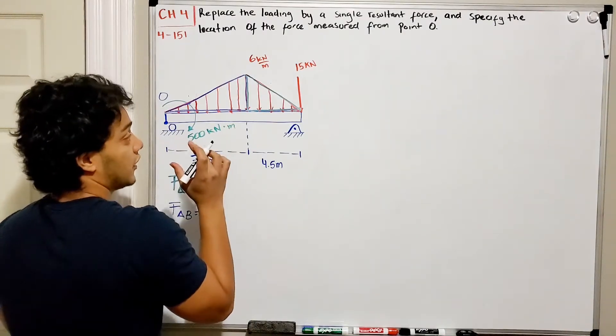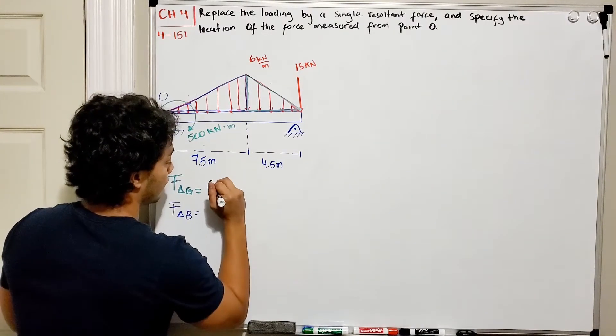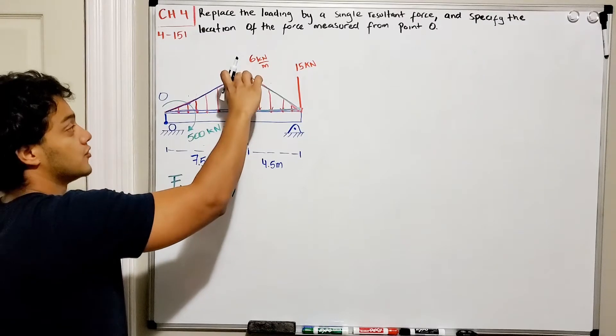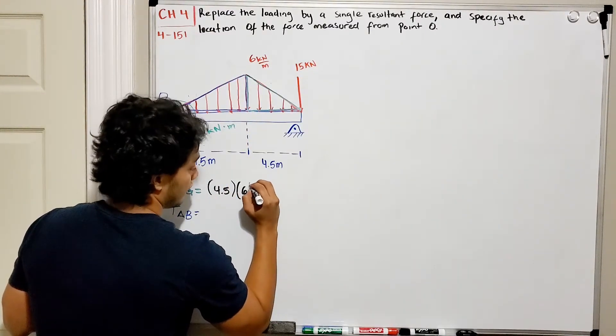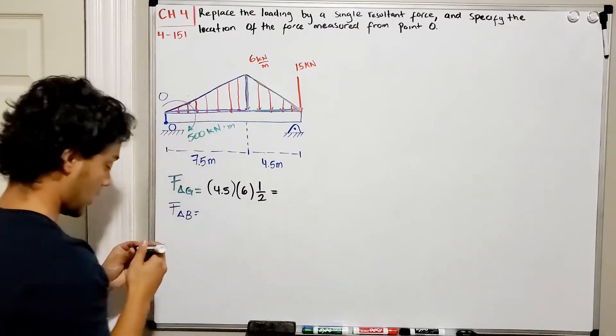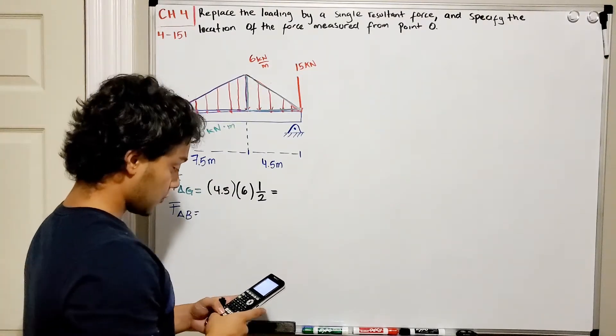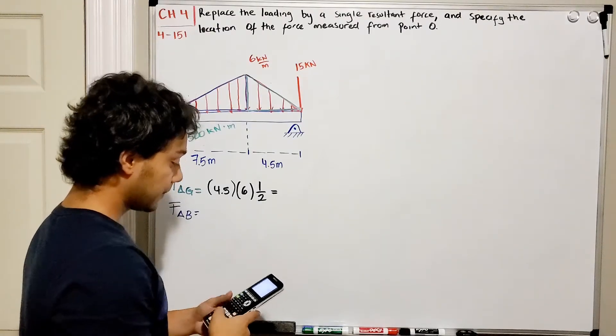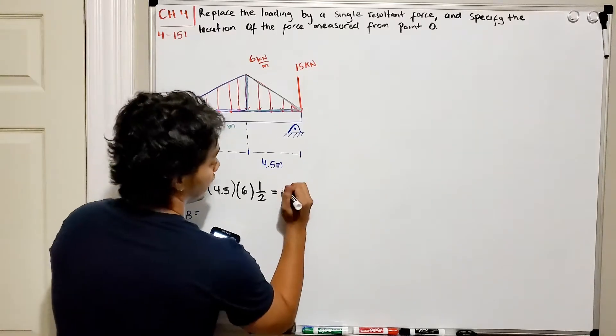For the green one, the area of a triangle is base times height divided by two. Taking that into account, I have my base which is 4.5, multiplied by my height which is 6 kN/m, divided by two. Let's check our calculator: 4.5 multiplied by 6 divided by 2, and that gets me 13.5 kN.